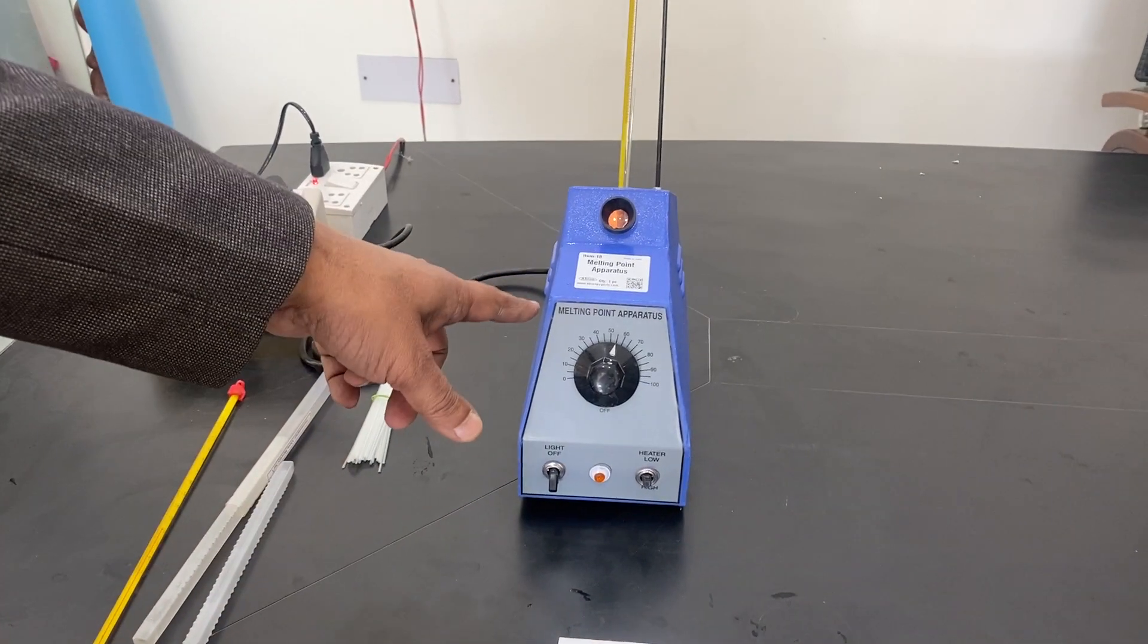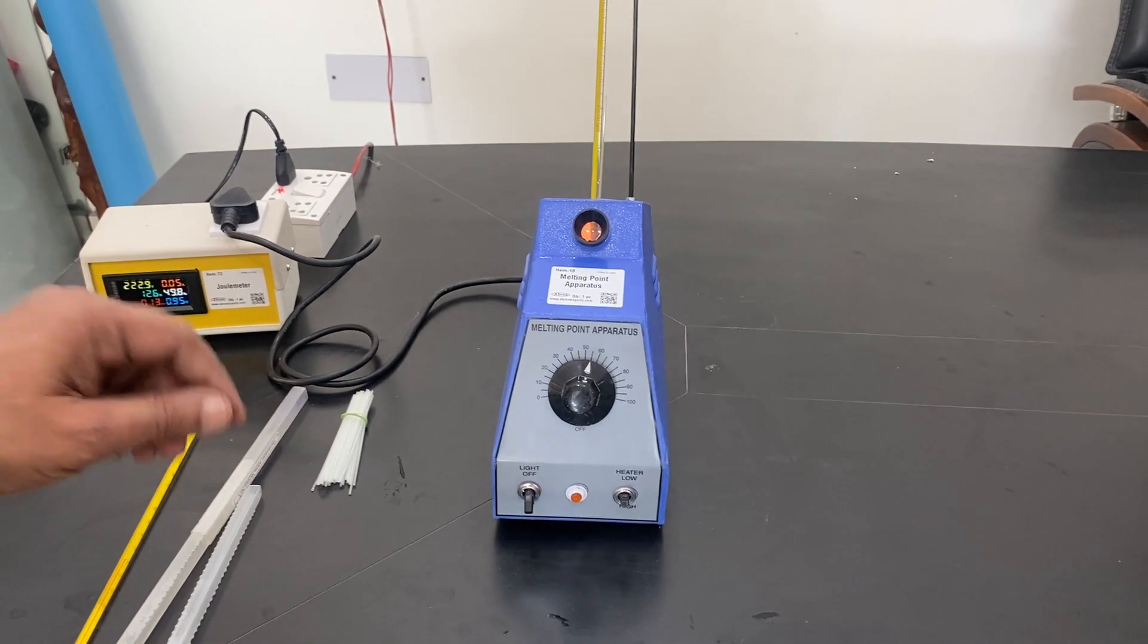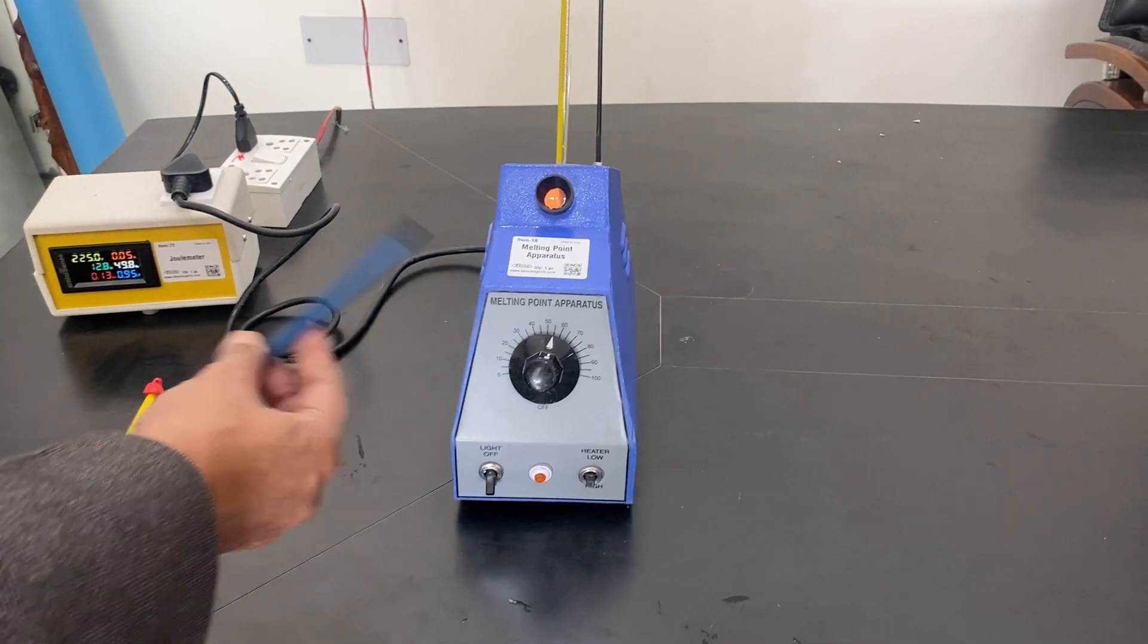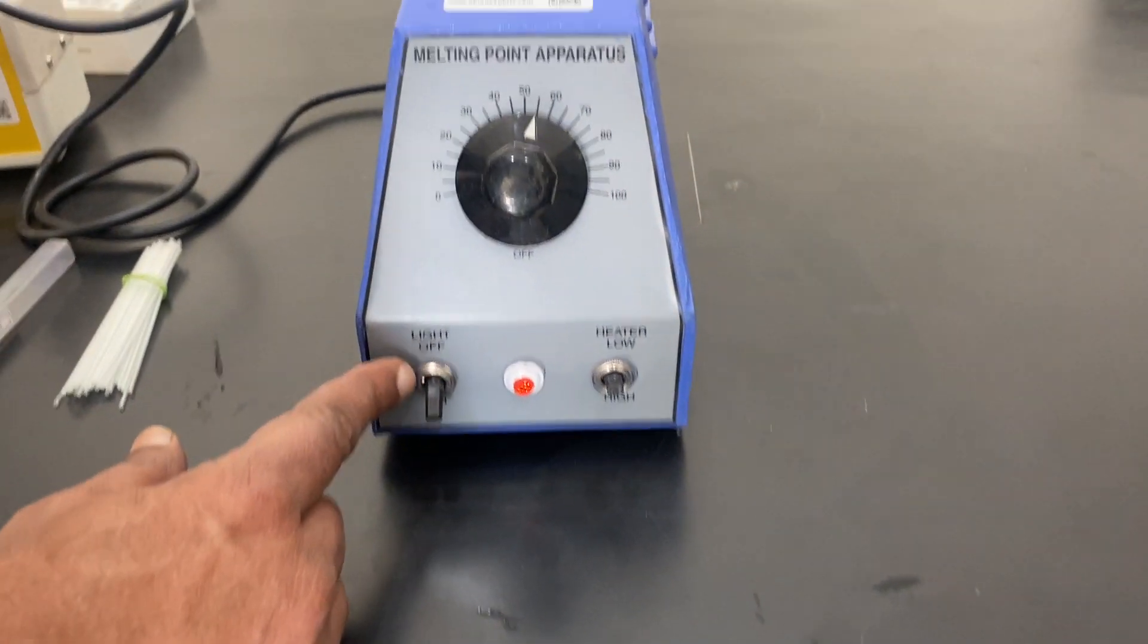This is a melting point apparatus for powders. For solids, you have to make a powder first. This is for checking the melting point manually. This one is the on/off switch.